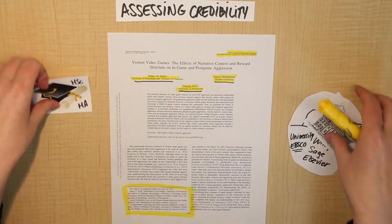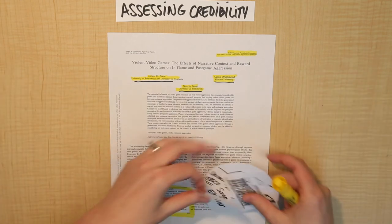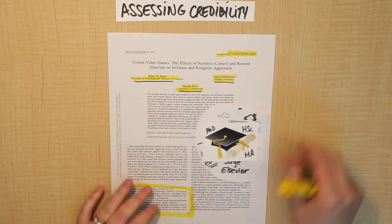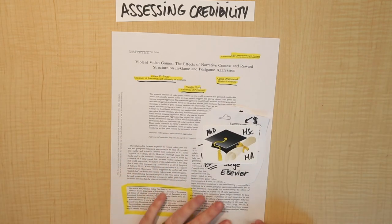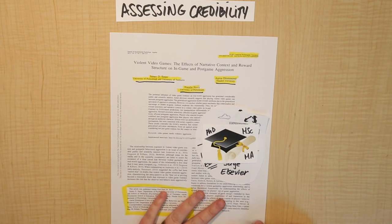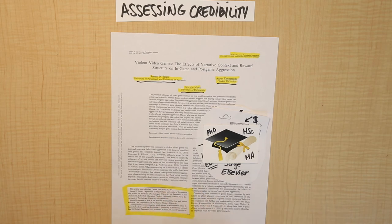Sometimes it's a little bit more tricky to tell when you're looking at open access articles. So let's take a look now at some of the ways that you can assess their credibility when you're looking at them online.